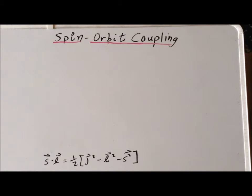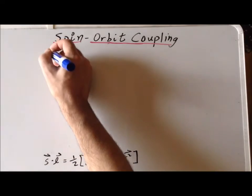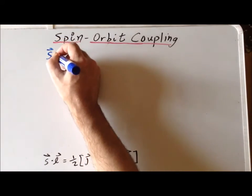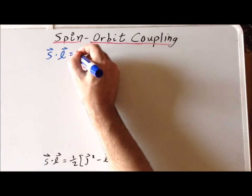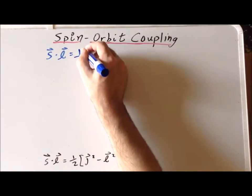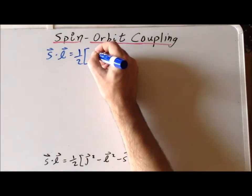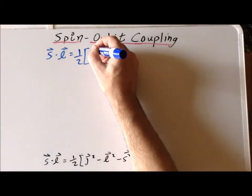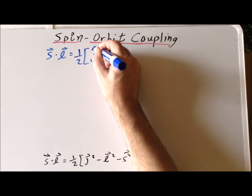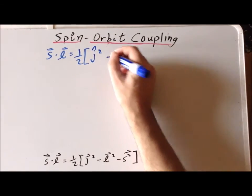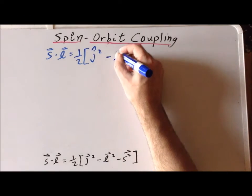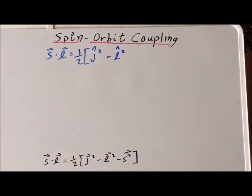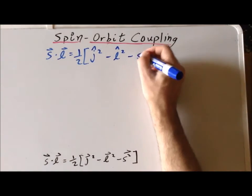This is effectively a classical expression and we can convert it to quantum mechanics relatively easily, simply by replacing the vectors on the right-hand side by the corresponding quantum mechanical operators. To replace the J vector squared, we have the J operator squared — we put a little hat on it to remind ourselves that it's an operator. In place of the L vector squared, we have the L operator squared. And in place of the S vector squared, we have the S operator squared.